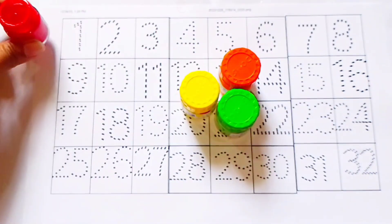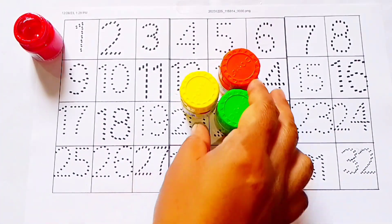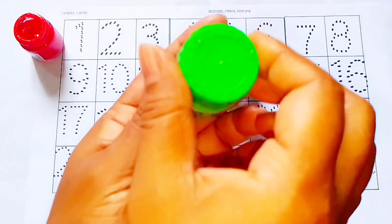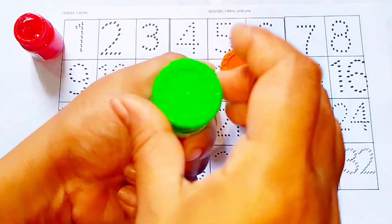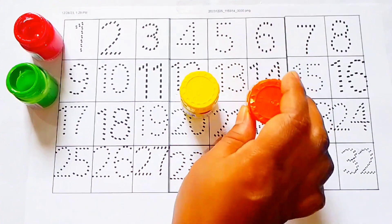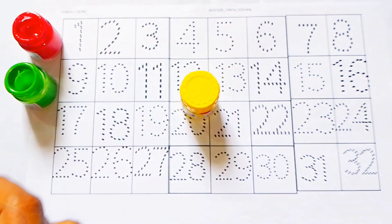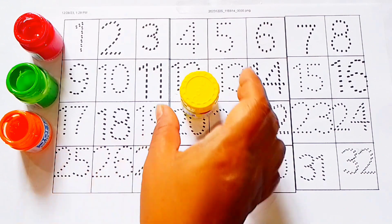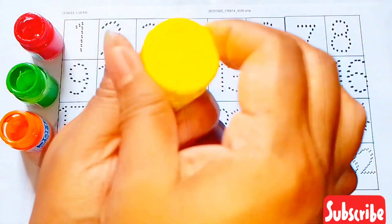This is red color. This is green color. Orange color. Yellow color.